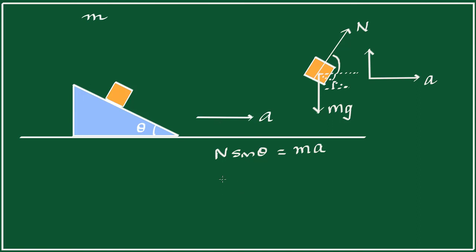And in the vertical direction, there is no acceleration. So N cos theta is equal to mg.